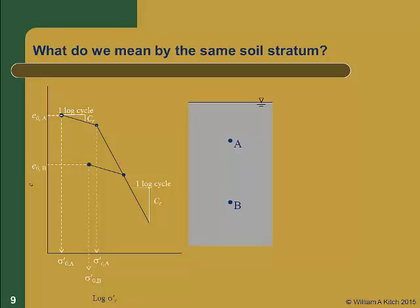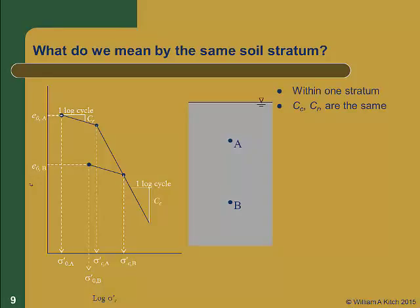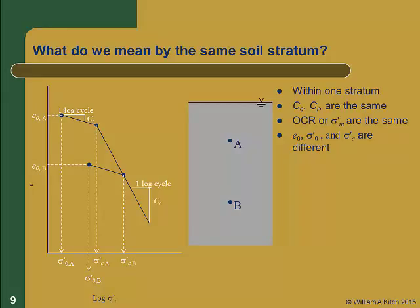If we load the soil at B it will have the same compressibility as at A, loading initially along the same recompression curve C sub R. But it will intersect the virgin curve at a different point and will have a different sigma prime c. So sigma prime c at B is different than sigma prime c at A. When we say soils are the same within a stratum, we mean their compressibility is the same (C sub C and C sub R are the same) and they have the same degree of over consolidation (OCR or sigma prime M are the same). What is not the same are the initial void ratio E naught, the initial vertical effective stress sigma prime zero, and therefore the pre-consolidation stress sigma prime c.